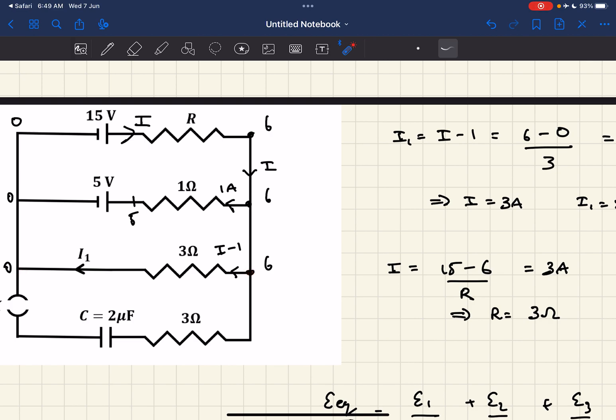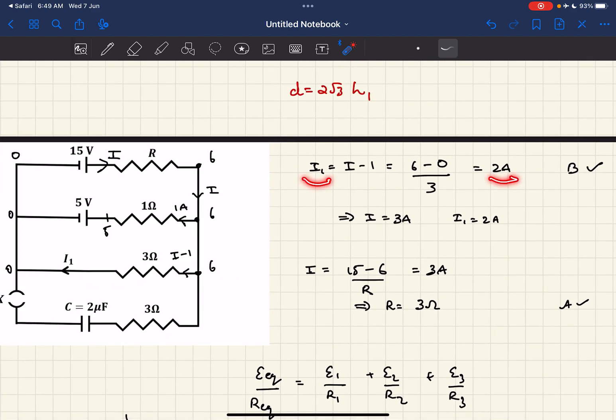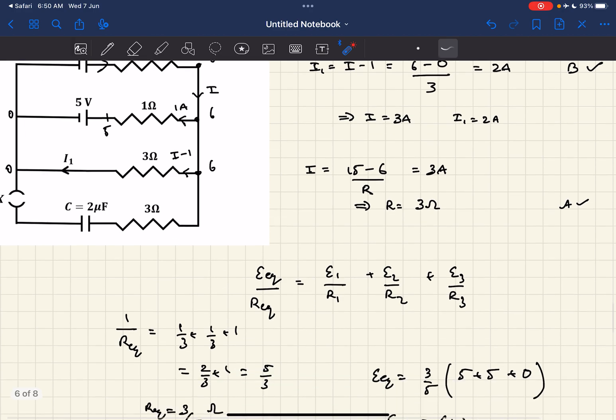Now we can easily find i1 using Ohm's law: delta V by R, so 6 minus 0 divided by 3, which means i1 is 2 amperes, option B which is correct. Since i1 is also i minus 1, i equals 3 amperes. Using Ohm's law again: 15 minus 6 divided by R equals 3, so R equals 3 ohms, which is option A.